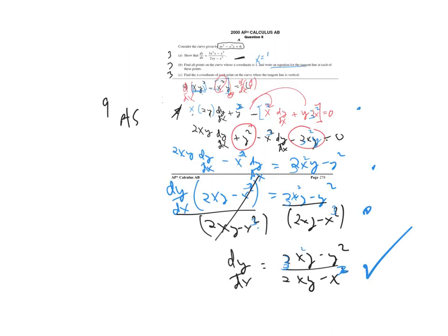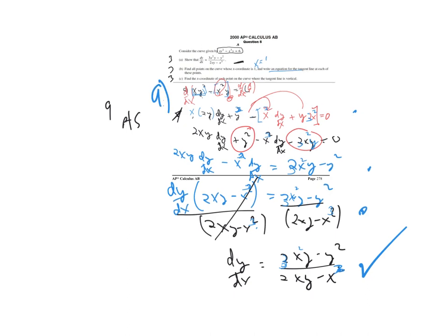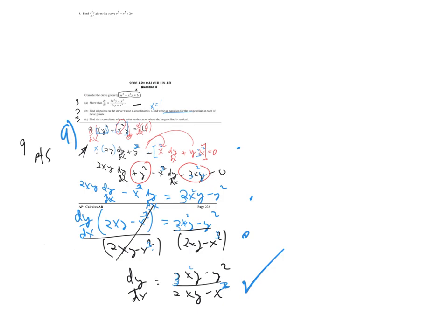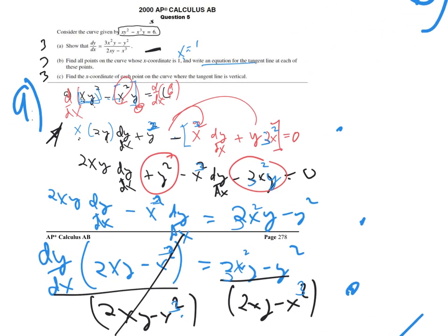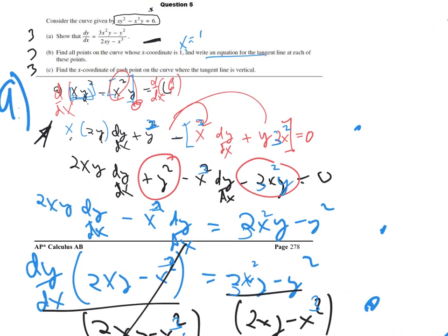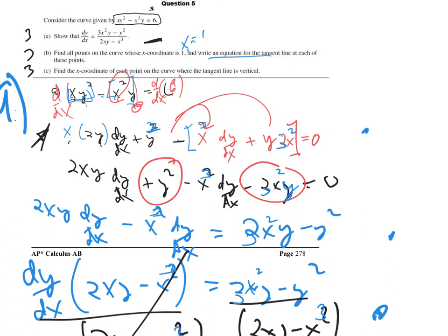I forgot to record the steps of this problem, but it's there. Part A is here, so we're going to move on to Part B. He's telling us X has to be 1, and then we have to find all the equations of the tangent lines for every one of those places.